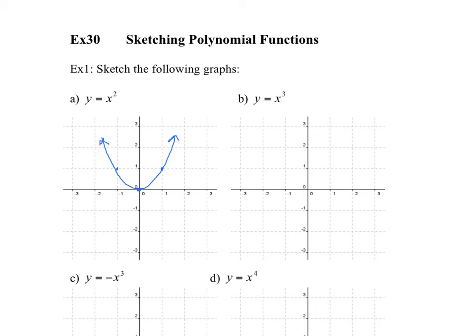The x cubed function is a little bit different than x squared. An even exponent will always stay positive on both sides. But anything negative to the power of an odd exponent stays negative. So this shape still appears except it goes into the negatives. At zero you get zero, at one you get one, but when you plug in negative one you get negative one. What you end up getting is two half-parabolas facing opposite directions.